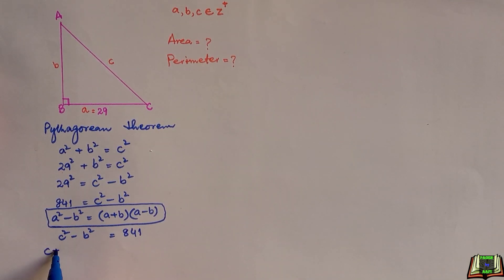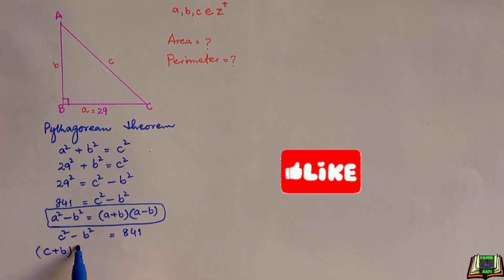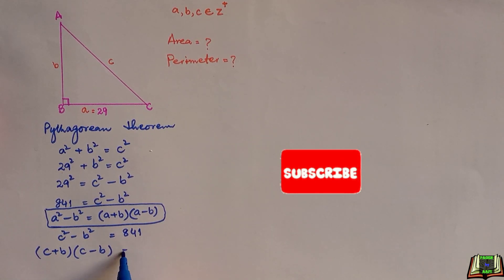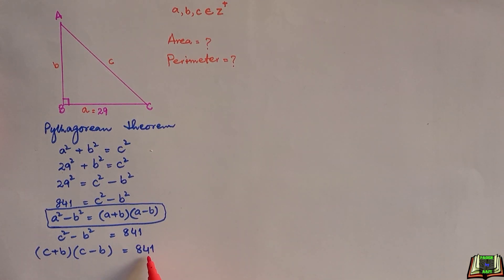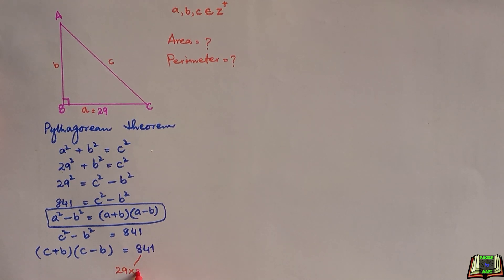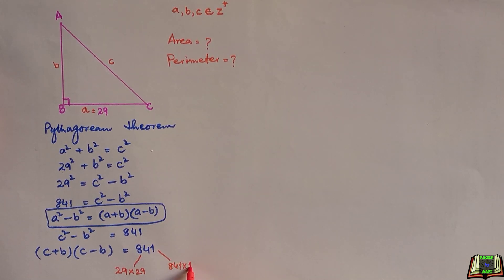Applying the algebraic identity, C² − B² becomes (C + B)(C − B) = 841. We are going to factor 841 and use both factor pair cases to find the values of B and C.